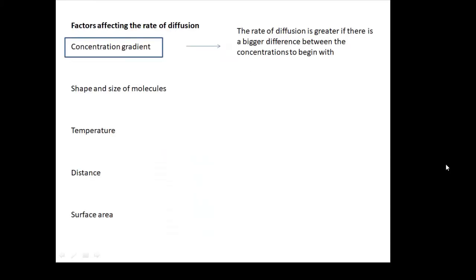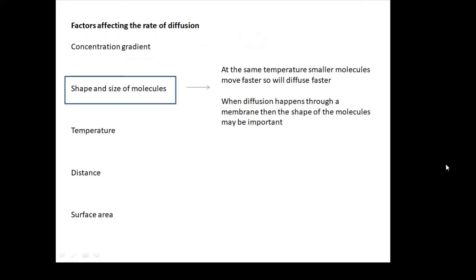These are the factors affecting the rate of diffusion. The concentration gradient: the difference in concentration either side of the membrane. The rate of diffusion is greater if there's a bigger difference between the concentrations to begin with. The shape and size of the molecules — at the same temperature, smaller molecules are moving faster, so they will diffuse faster.